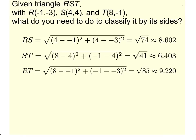So what that tells me is triangle RST, if I am to classify by its sides, it can either be scalene, isosceles, or equilateral. Since all the sides are different, this is indeed a scalene triangle.